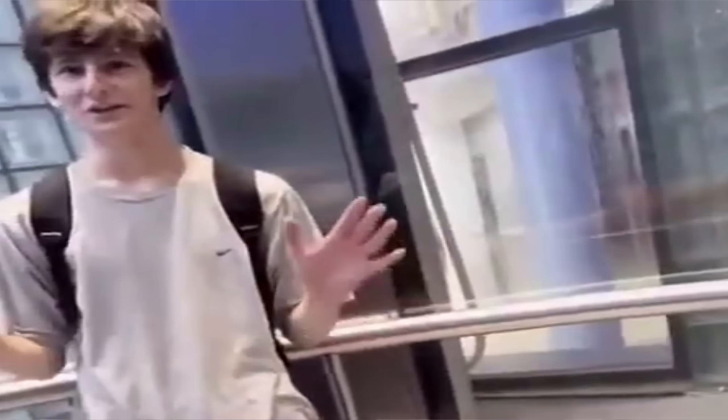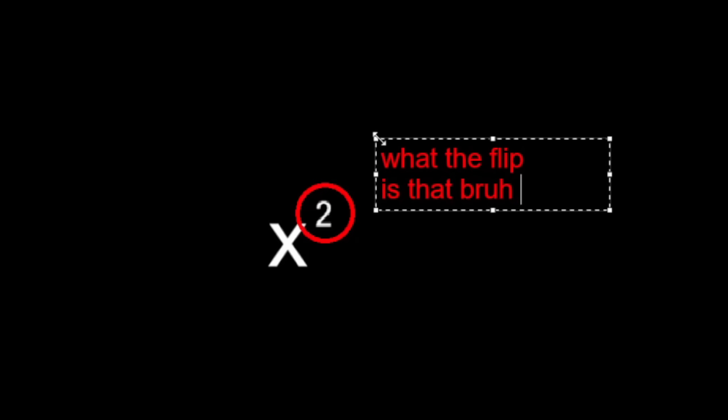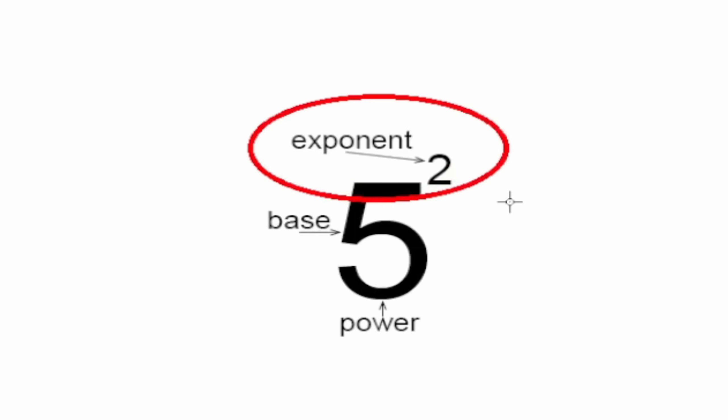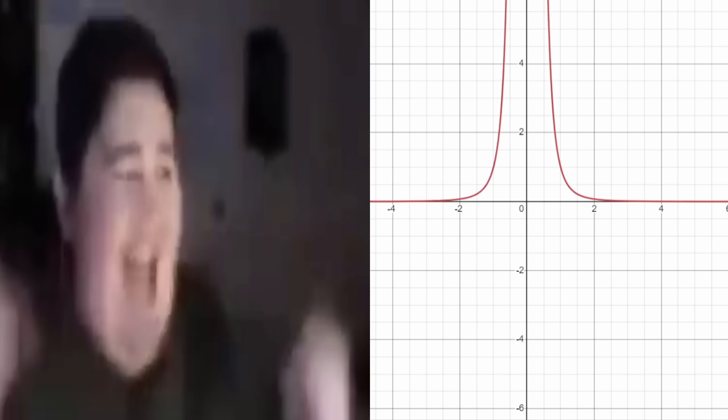But when we look at this — what the flip is the two? Well, it is the exponent, a value that makes straight lines go like this.